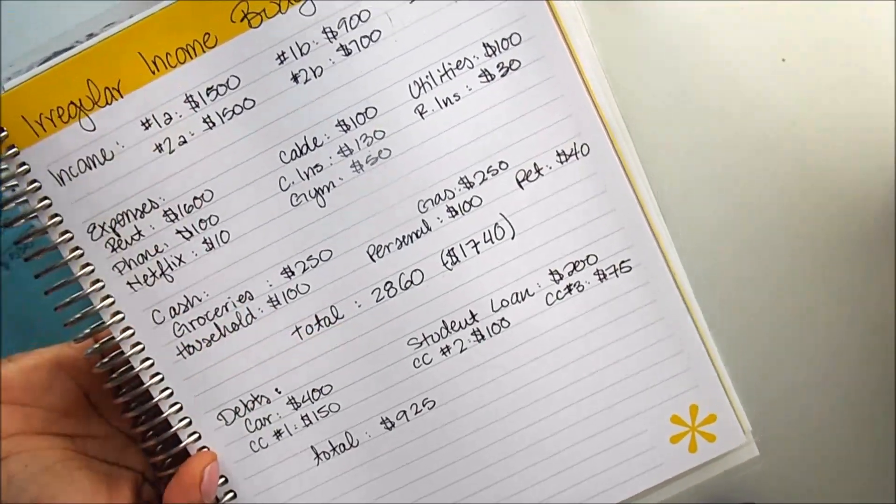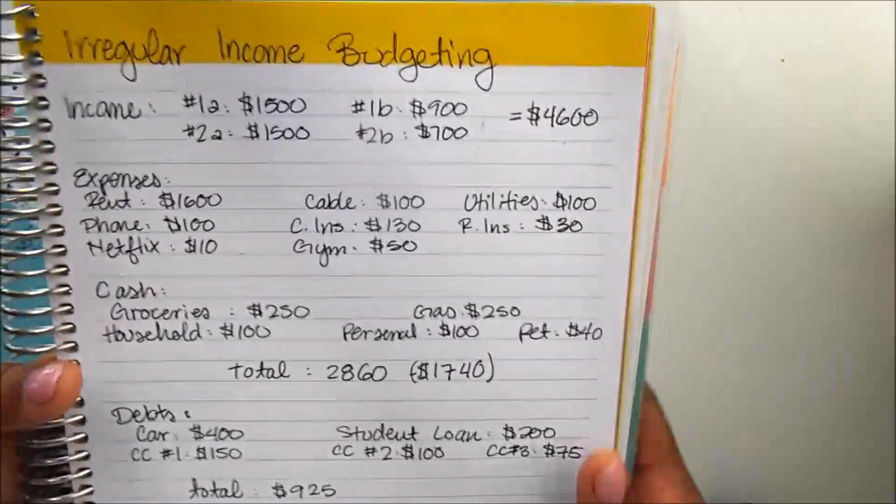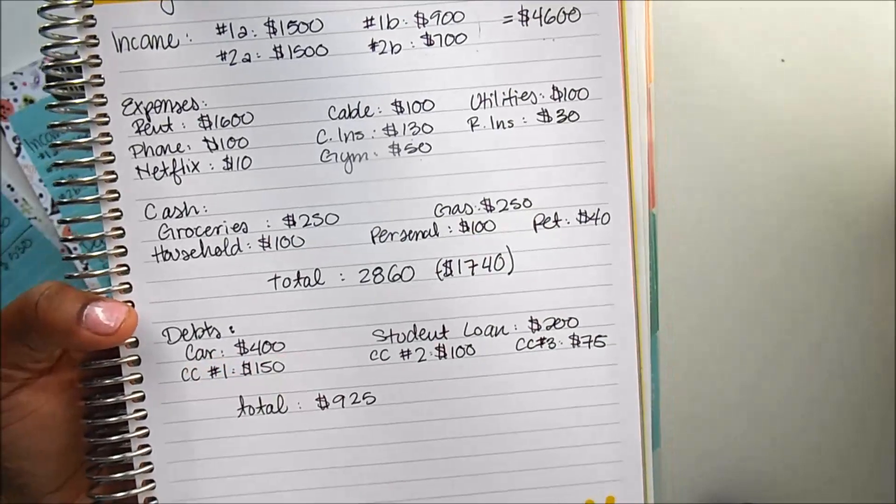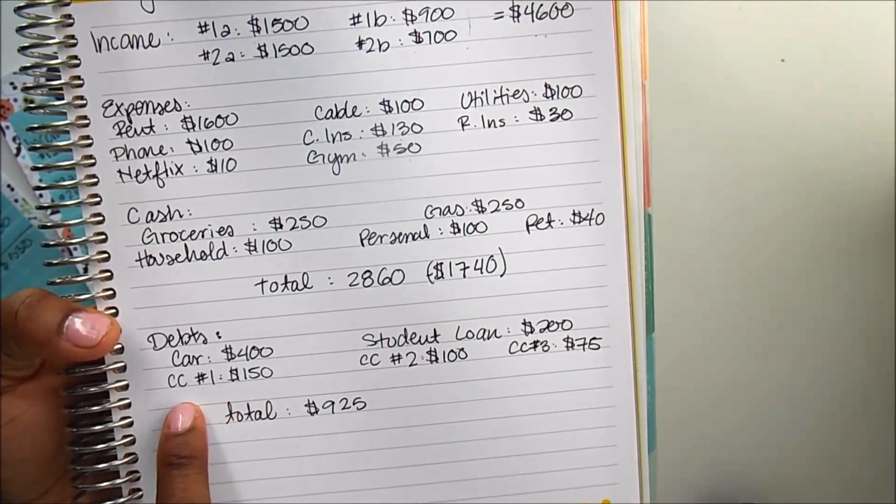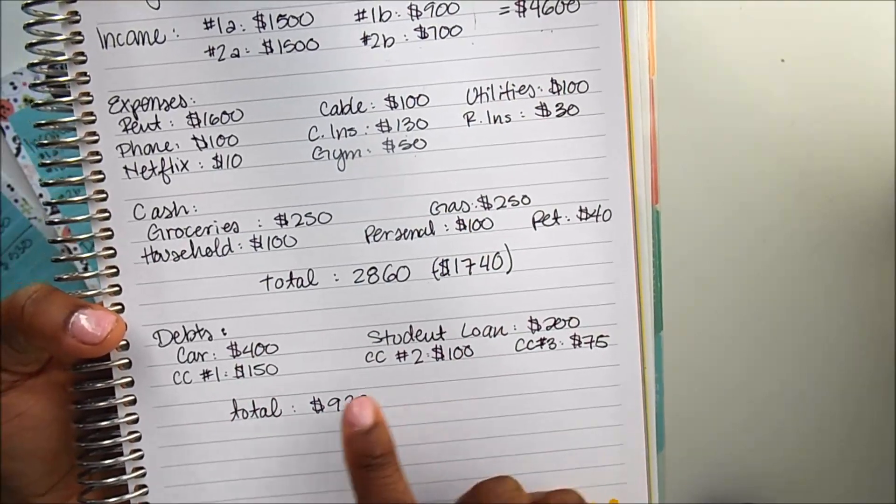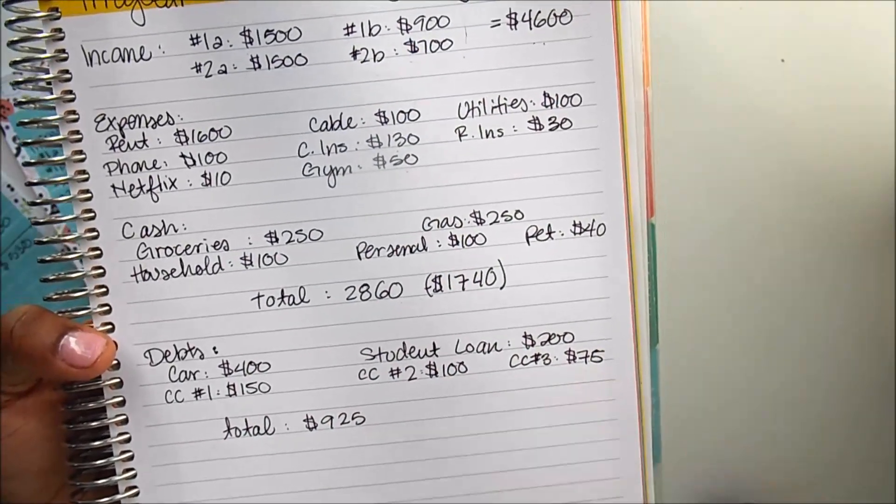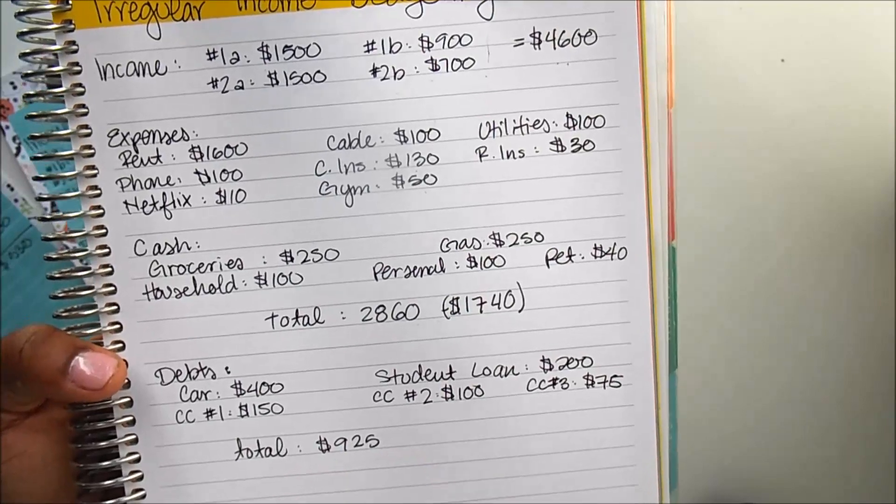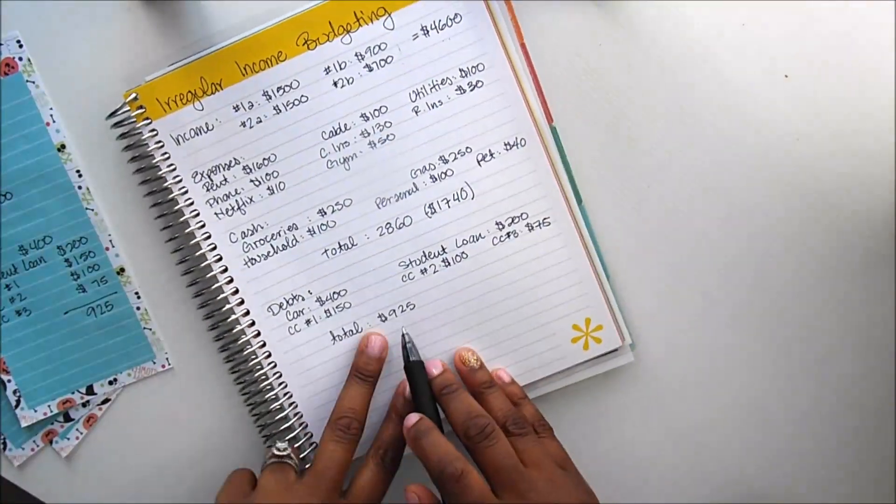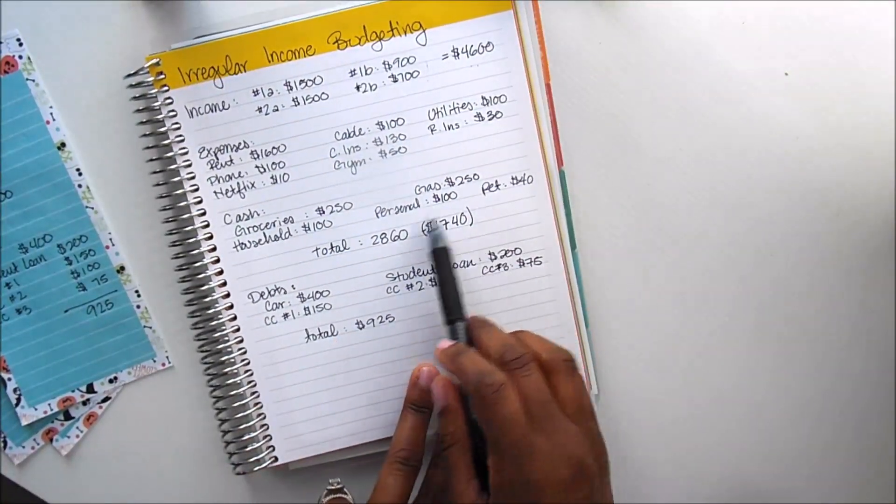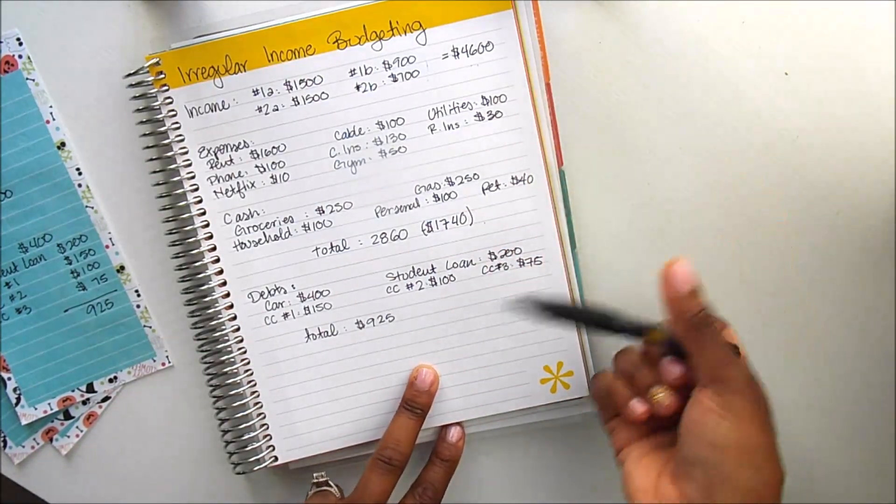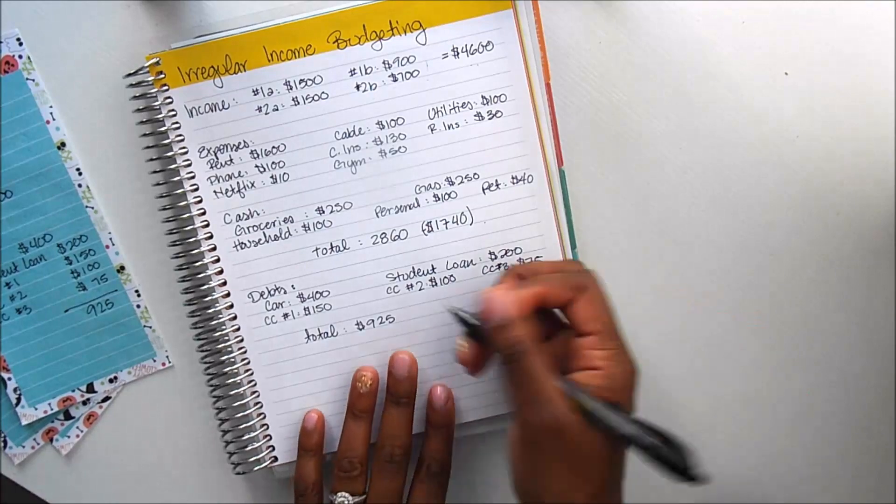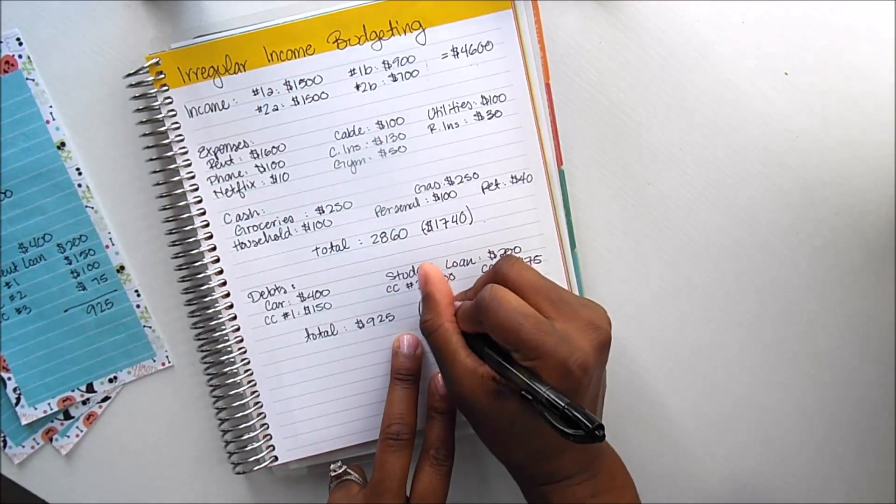Okay friends, so now that I have our debts listed out here, we have a car payment at $400, student loan at $200, and then credit card number one $150, credit card number two $100, and number three is $75, for a total of $925. So from that $925, our difference from the $1,740 that we have left over from paying our expenses once we had our income figured out, we're now looking at $815 as our remainder.